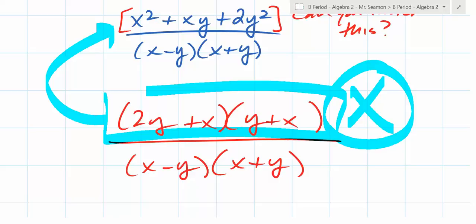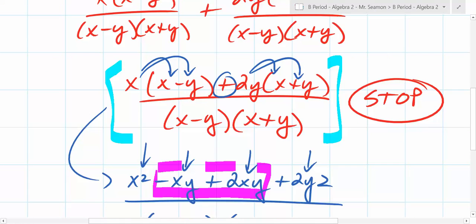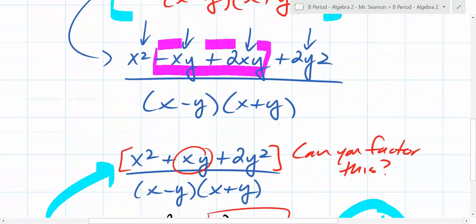No. If you do this out just to check, what do you end up with? 2Y squared. Okay. That's good. Plus 2XY plus XY plus X squared. What's the problem? You have 3XY, not XY. Exactly. So you would stop right there. Okay. Another one.